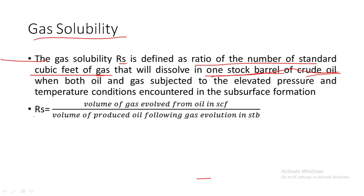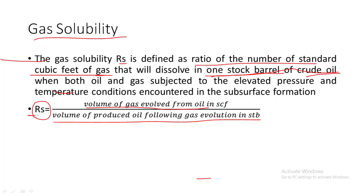The mathematical representation of Rs, gas solubility, is defined as: Rs equals the volume of gas which is evolved from oil as pressure decreases, divided by the volume of produced oil following gas evolution. So after the gas has evolved, how much volume of oil has been produced — that is in the denominator. The ratio of both is nothing but gas solubility.